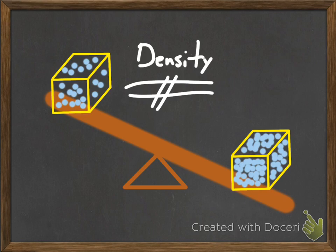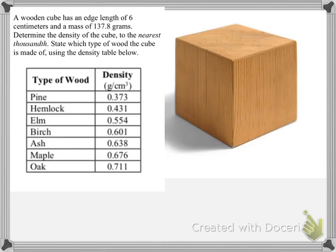So let's look at this example. We looked at this example in class. Basically a wooden cube has an edge of 6 centimeters and a mass of 137.8 grams. Determine the density of the cube to the nearest thousandth, and then we can figure out what type of wood it's made up of. So different woods have different densities, and again, this is grams per volume.